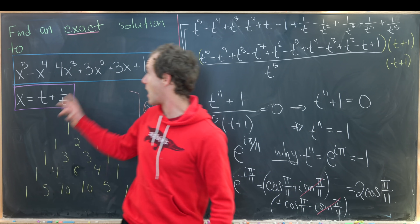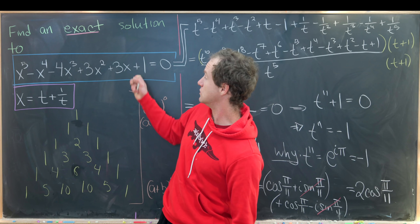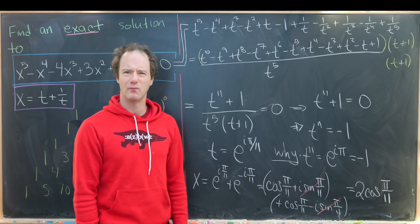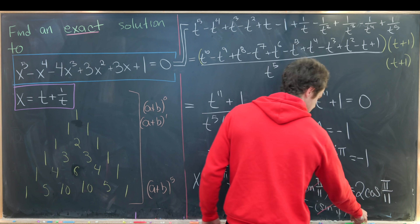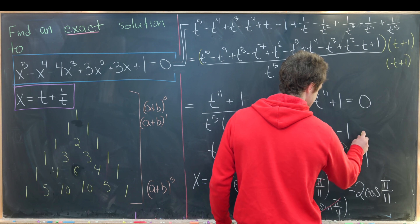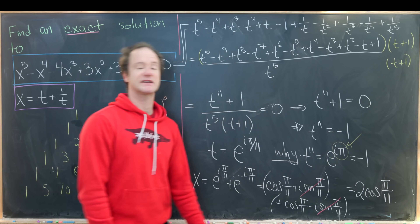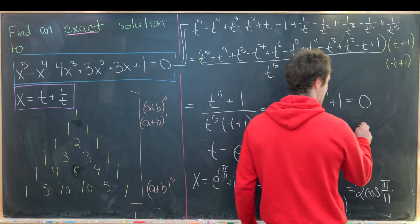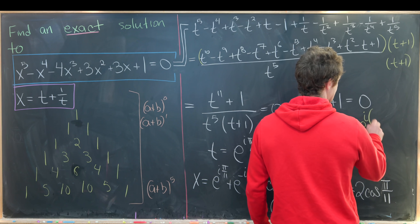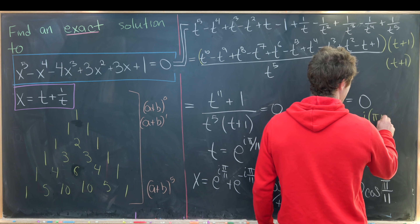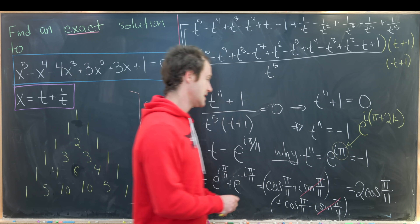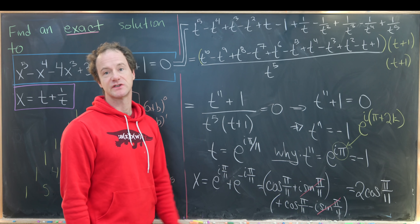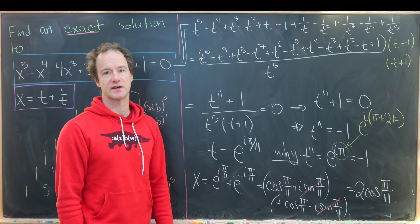We have found one exact solution to this quintic polynomial equation. To find more solutions, we use the periodicity of the complex exponential: instead of writing minus 1 as e to the i pi, we write e to the i(pi + 2k pi) and take the 11th root, which gives all the other solutions. And that's a good place to stop.